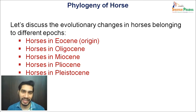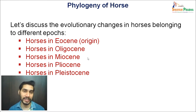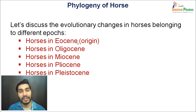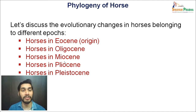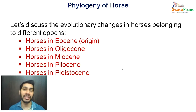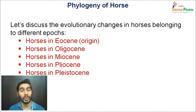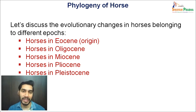After having a brief understanding of what has been the evolutionary trends in the phylogeny of horse, now let us discuss the evolutionary changes in horses belonging to different epochs — meaning how the modern horse, which has acquired all these evolutionary trends, travelled across their journey of time. We will take representative examples of each epoch and focus on their structural changes throughout that journey.